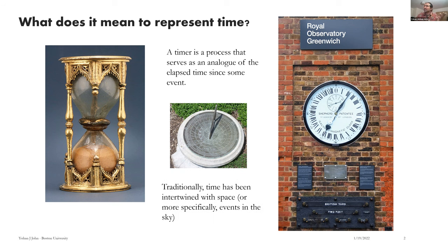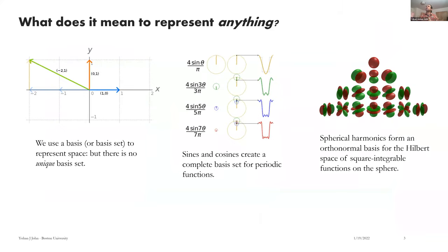Traditionally time has been intertwined with space, or more specifically events in the sky — the position of the sun and the stars. When Einstein talked about spacetime as his grand unification, there's a sense in which ancient people would say 'of course they're the same.' So to step back: what does it mean to represent something?